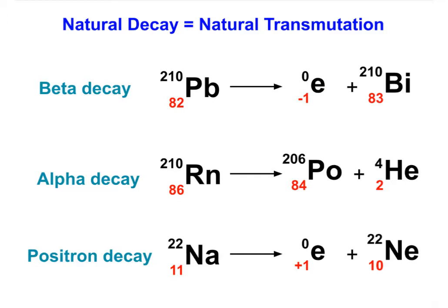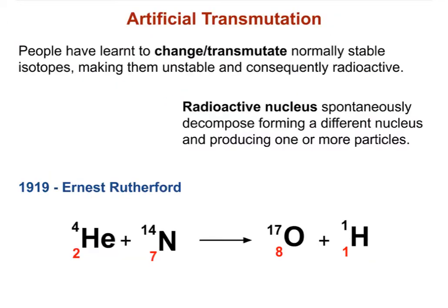Here are three examples of natural decay, also called natural transmutation. The word transmutation signifies the fact that our original nuclei turn themselves into something new. For example, lead-210 turns into bismuth-210, or radon-210 turns itself into polonium-206. So transmutation means that our nuclei change into a new type of nuclei. The word 'natural' identifies that we have nothing to do with this — the process occurs naturally and we are not causing it in any way.